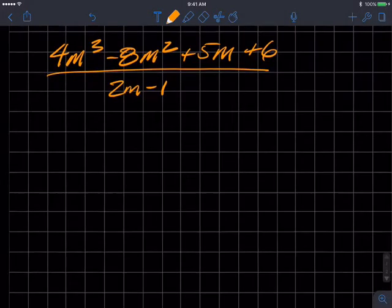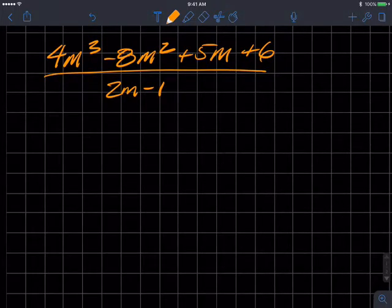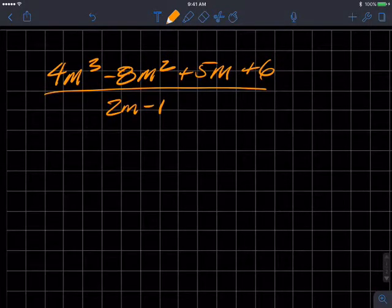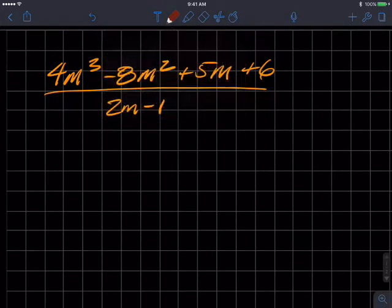This is a long division of polynomials, and here's an example for us. 4m cubed minus 8m squared plus 5m plus 6 divided by the binomial 2m minus 1. Now we need to make sure we take note and think about this beforehand.